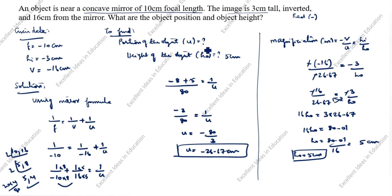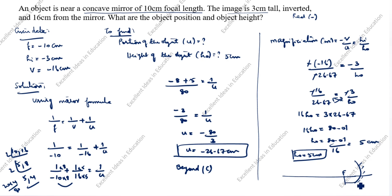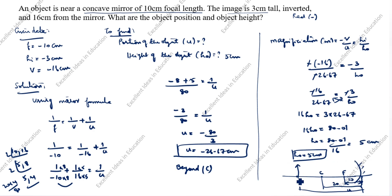So ho equals 5 centimeter. Looking at the diagram of the concave mirror: f is minus 10, so focal point is at 10; center of curvature C is at 20. Since u is 26.67, the object is beyond C. The object height ho is 5 centimeter. Based on this drawing, we can confirm the position of the object is beyond C. Thanks for watching this video.